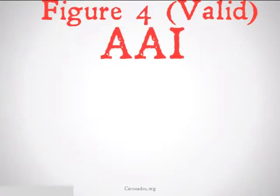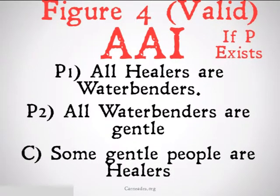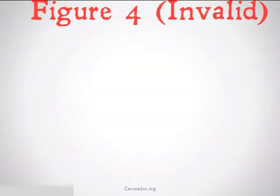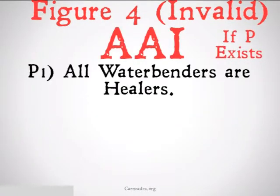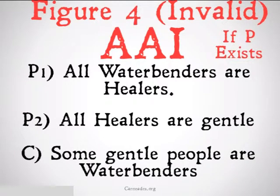Finally, Figure 4 valid AII — this is only going to be valid if P exists. All healers are waterbenders. All waterbenders are gentle. Therefore, some gentle people are healers. Healers exist in the world, so this is going to be valid. However, an invalid version would be: all waterbenders are healers, all healers are gentle, therefore some gentle people are waterbenders. Waterbenders don't exist, so P doesn't exist, making this an invalid argument.